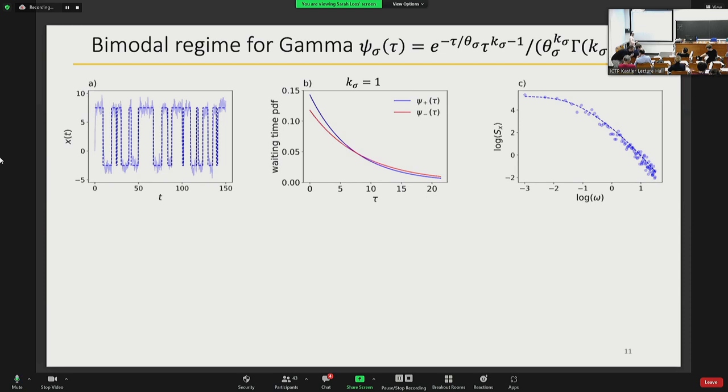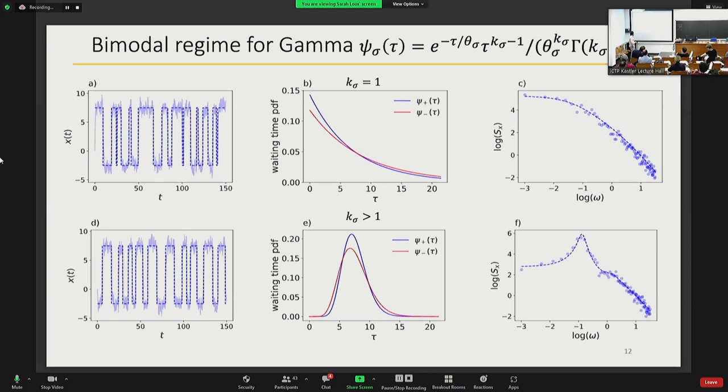You can see that with k equals one, the oscillations are not very regular, which can be seen also at the level of the power spectral density by noticing that there is no time scale in the system, so there is no peak in the power spectrum. This is a comparison between analytical formulas and numerics. While if you consider instead a waiting time distribution with a proper time scale, then you see that the oscillations are more regular and also the power spectrum develops a peak, so the system is properly oscillating. This is once again a comparison between analytics and numerics.